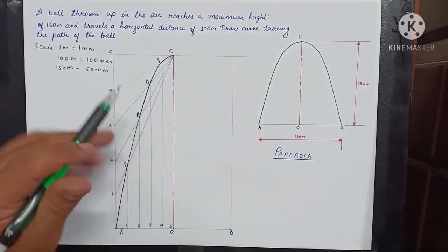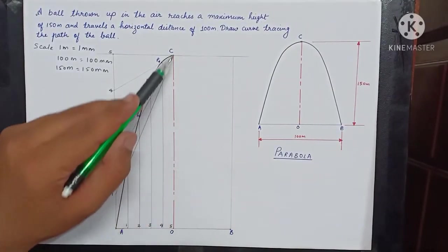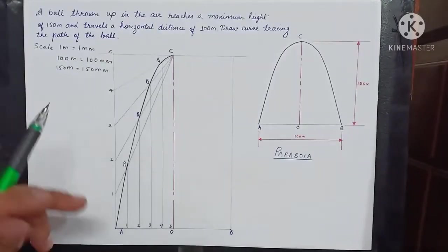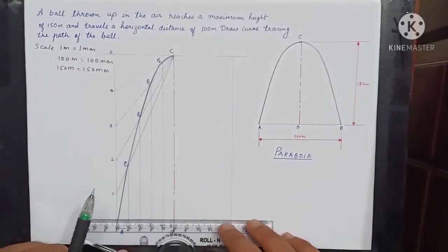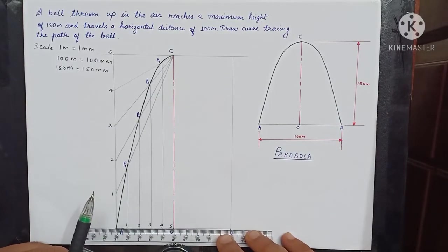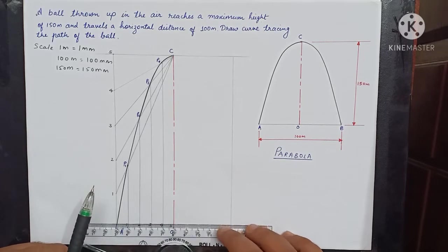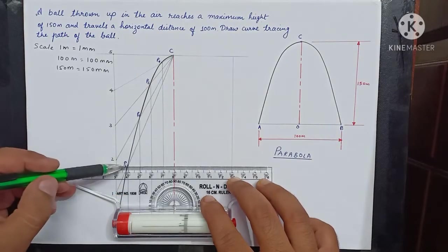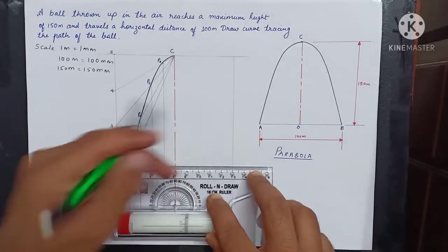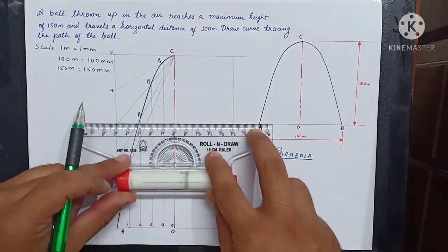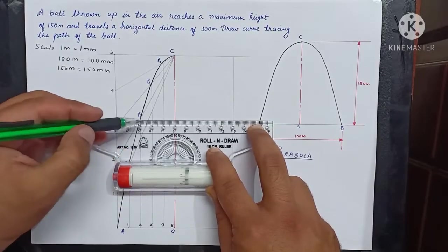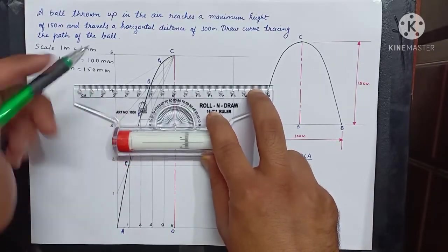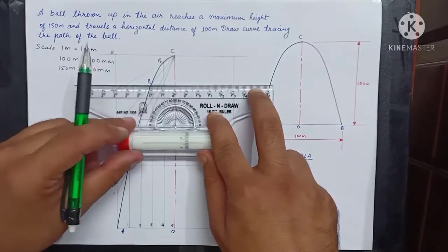Now we can repeat the same procedure for this rectangle and complete the curve, else we can just copy these points to save time. So we will match the ruler scale with the base, that is the horizontal line. Then you slide it till point P1 and draw a horizontal line. Then P2, then transfer P3, and then P4.